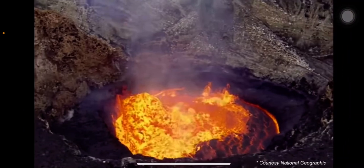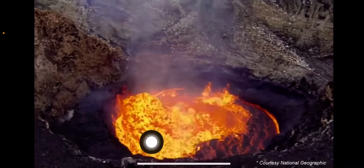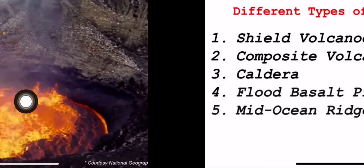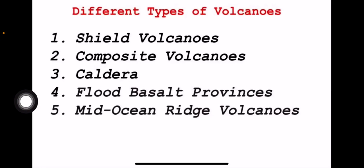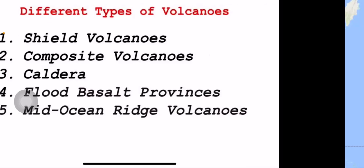Looking at a volcano image, you can see different types of volcanoes: shield volcano, composite volcano, caldera, flood basalt provinces, and mid-ocean ridge volcanoes. Let's see the details of each.